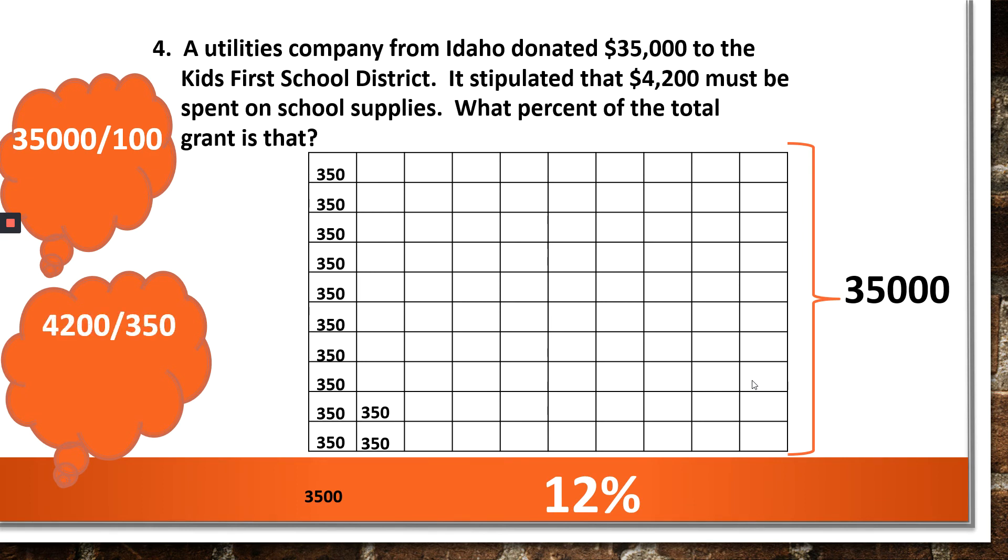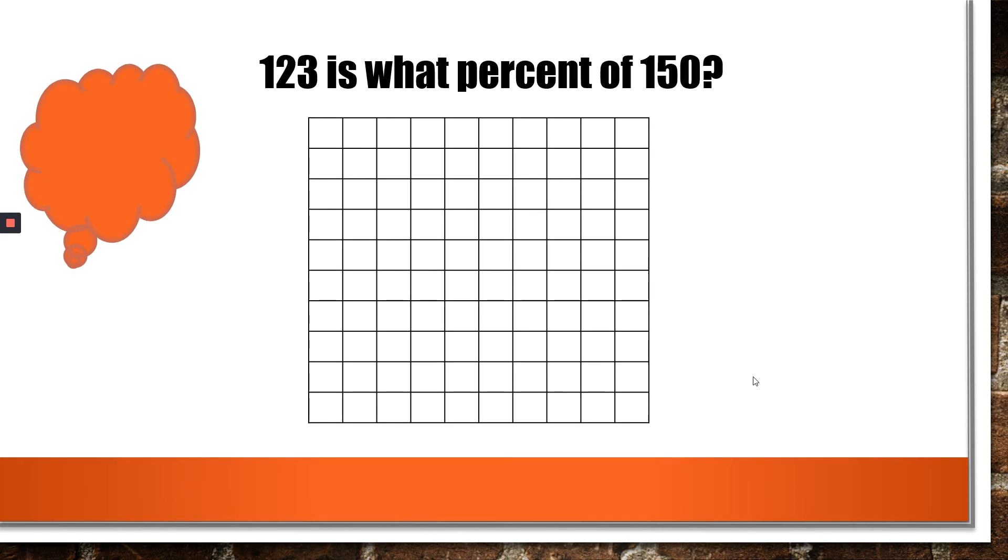Now, someone else may have wanted to do it like this. How many $350s fit in $4,200? That would still be 12. Or some folks might want to do it by part to whole. $4,200 is the part. $35,000 is the whole. And use that in the calculator, and you'll get 0.12, which is translated to 12%. Nice.